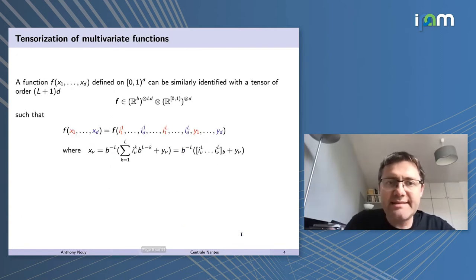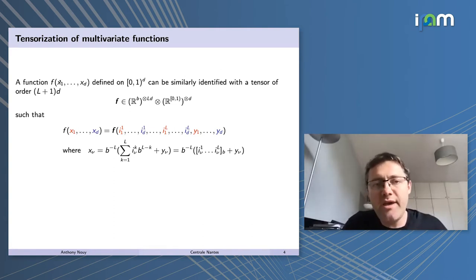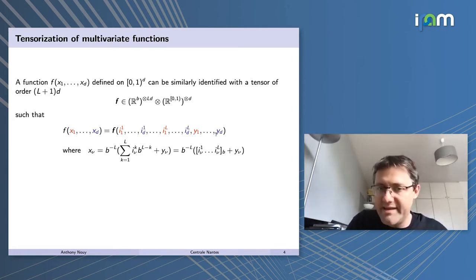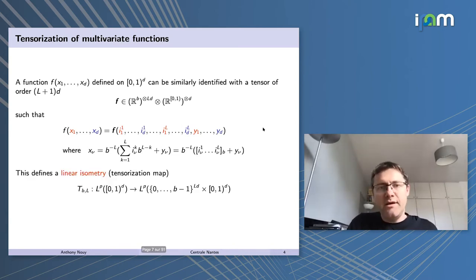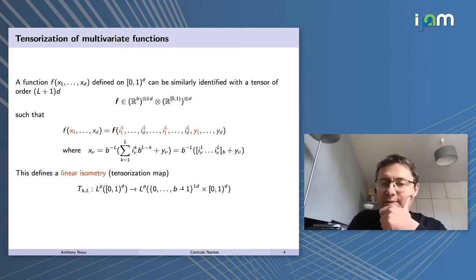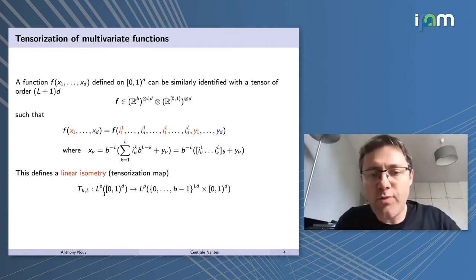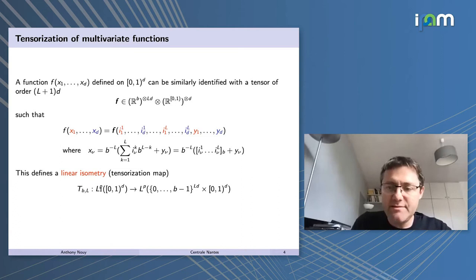This procedure can be easily extended to multivariate functions. If you have a function defined on a hypercube, you proceed in a similar way for every variable by encoding these variables using some digits between zero and B minus one, and some local variables Y1 to Yd. The nice thing with this identification of a function with a higher-order tensor is that it is in fact a linear isometry between LP spaces, where these LP spaces are equipped with uniform measures, so that any topological properties obtained for sets in this tensor space carry over to the initial function spaces.